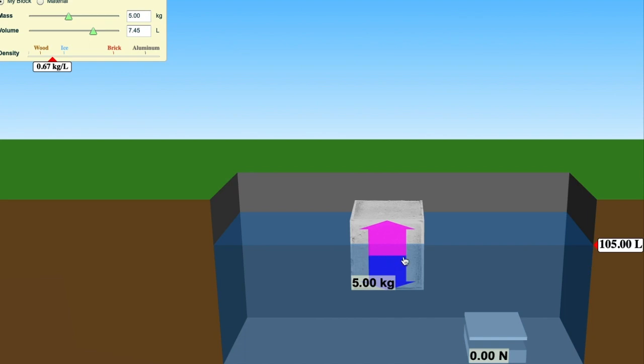And it really, since my density is 0.67 kilograms per liter, that means 67% of this block is sitting below the water level and the remaining 33% is sitting above it.